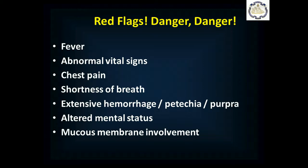After your history and exam, you need to know if you should be worried. These are the red flags: the patient has a fever or abnormal vital signs, chest pain or shortness of breath, hemorrhage in multiple spots across the body, or petechiae or purpura — which can be signs of benign local vasculitis or, critically, meningitis. Anyone with a rash and altered mental status is very concerning, particularly with any history of headache. Mucous membrane involvement is also concerning, as it suggests more systemic disease. If you see any of these red flags, contact medical control.